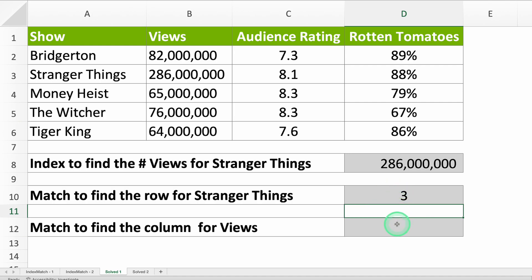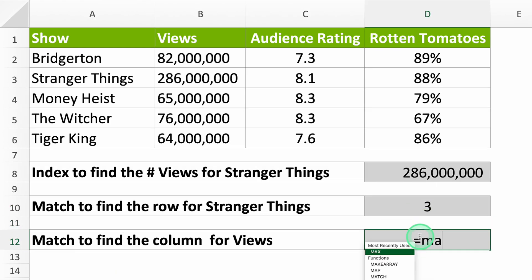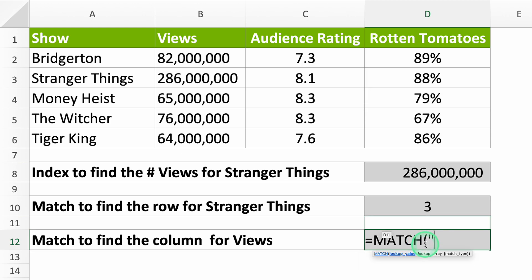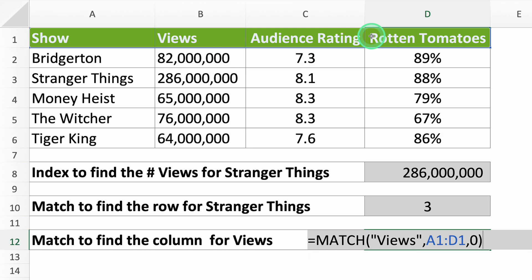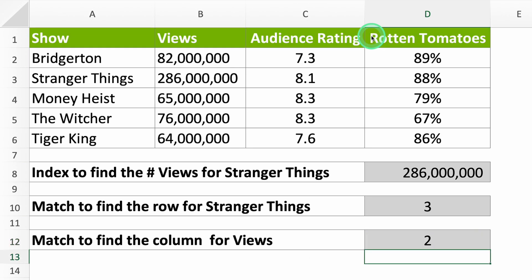To find the views column, use MATCH again. You want to find the views column, so type in views. You should look across all your columns, so select them. Then type in 0 for an exact match. Close your formula, press Enter, and done. It shows column 2.